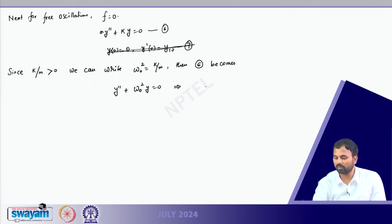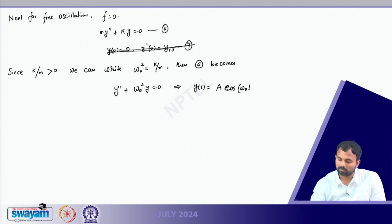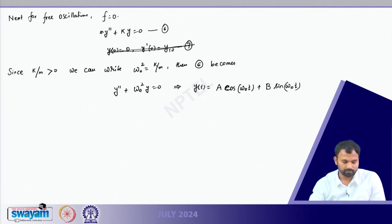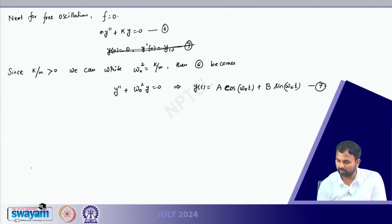Formulating the auxiliary equation gives roots plus or minus omega_0 times i. From there we can write down the solution: y(t) = a cos(omega_0 t) + b sin(omega_0 t). Call this equation 7. Now, if we use the initial conditions from equation 5.